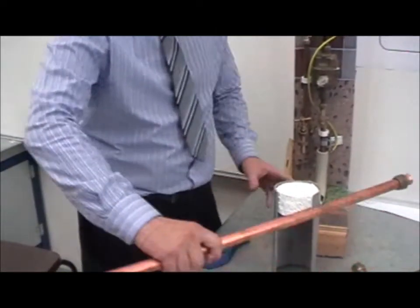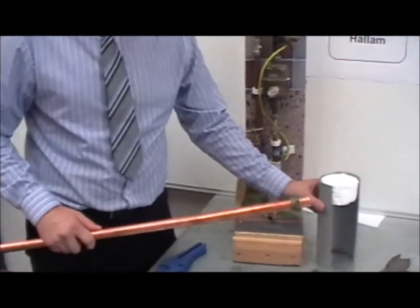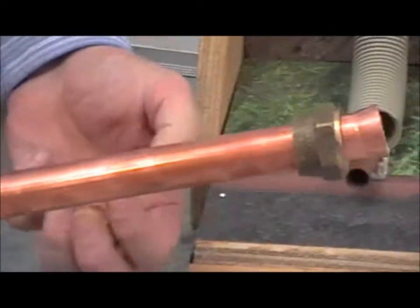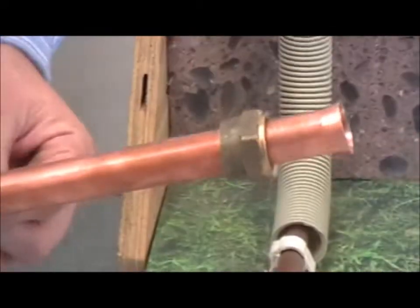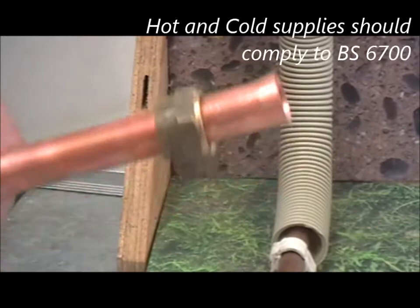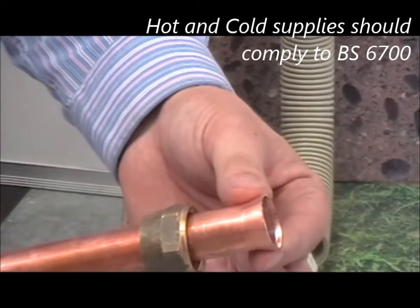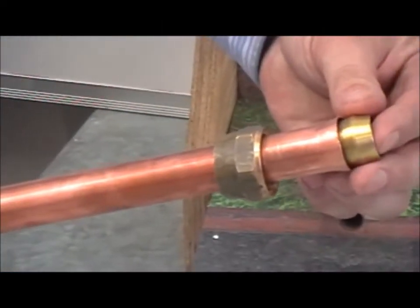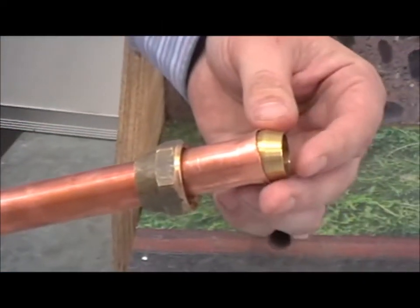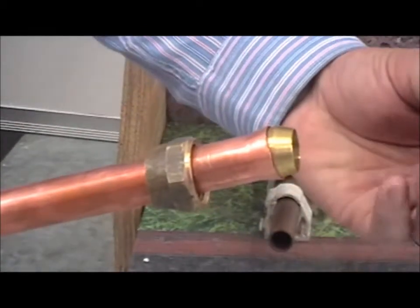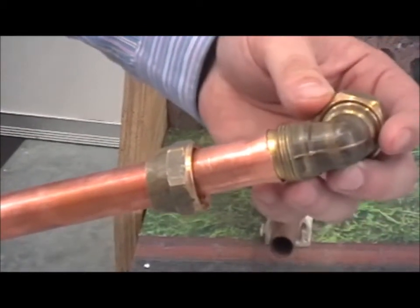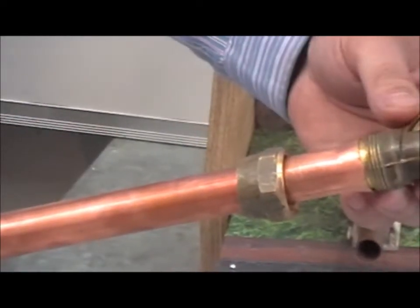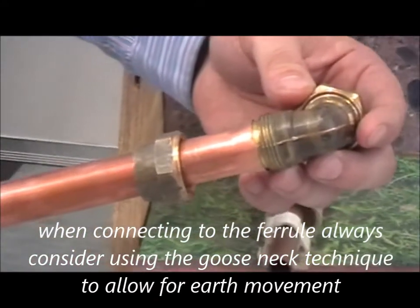If you're using copper pipe underground, the copper pipe that you're using must be Table Y because it's flexible and bends easier. Compression fittings underground must be Type B, manipulative, which is where you splay the end open and you use a thicker olive which is almost internal. As you can see, there's no possible way through subsidence that olive can be pulled off. So that is the key factor for underground pipework.